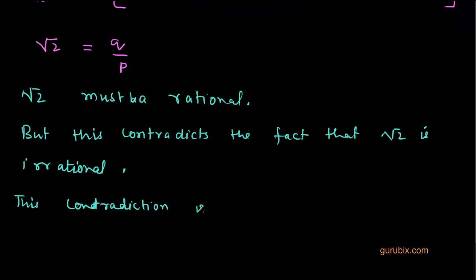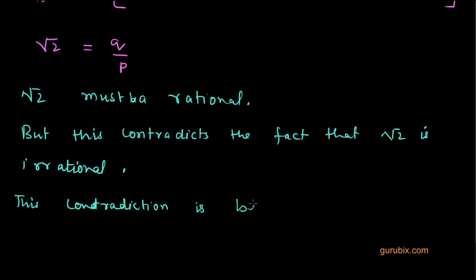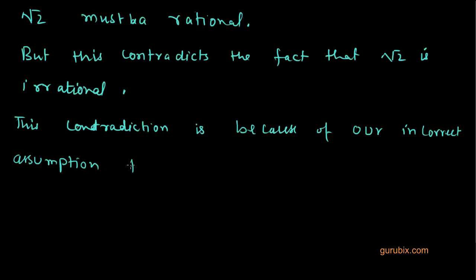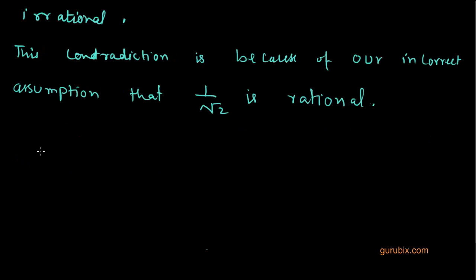This contradiction is because of our incorrect assumption that 1 over under root 2 is rational. Therefore, we conclude that 1 over under root 2 is irrational. That is the solution, thank you.